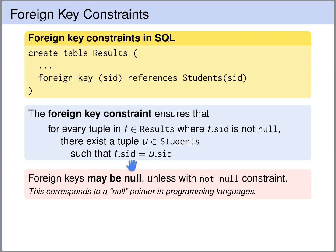It is important to note that foreign keys are allowed to be null. If we want to exclude this, we have to declare the foreign key as NOT NULL. This is similar to null pointers in programming languages — we can declare a pointer, but this pointer does not need to point anywhere; we can set it to null.